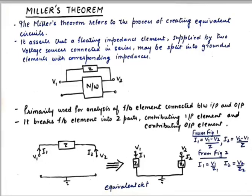Segregating the impedance in the feedback path into two different impedances — one for the input and one for the output — is the task of Miller's theorem. From figure 1 we can see that I1 is the current flowing from node V1, going from V1 minus V2 upon Z. The current I1 flows into the ground, so the expression becomes V1 upon Z1. I2 becomes V2 upon Z2. Since these two circuits are equivalent, we can equate I1 and I2 to find the values of Z1 and Z2.